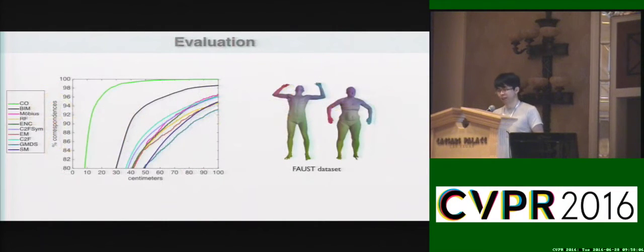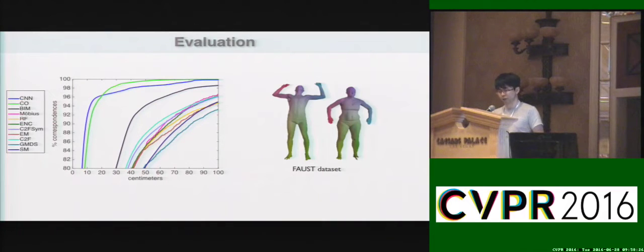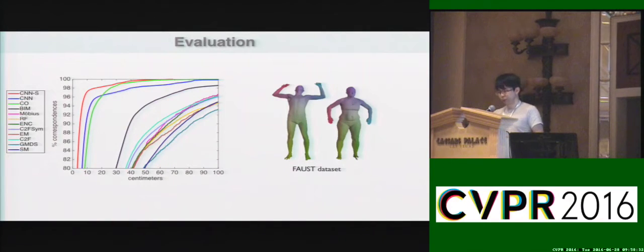We can evaluate our results from the neural net against classical methods. By applying the network to get the descriptor and finding the closest match on the mesh, we can achieve near-state-of-the-art algorithm performance. We can further improve this by applying non-rigid registration as a refinement, and it will finally outperform all existing methods.